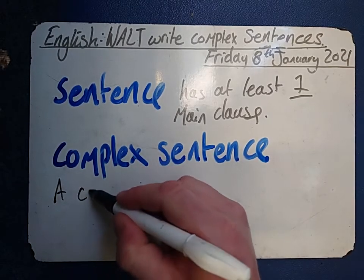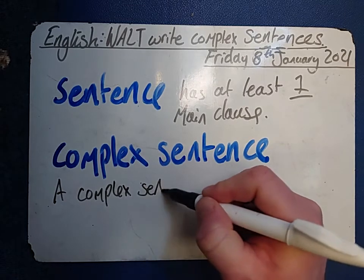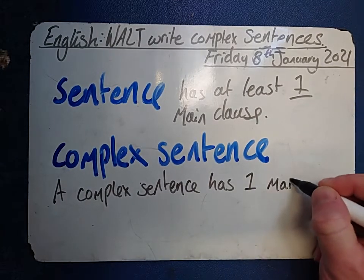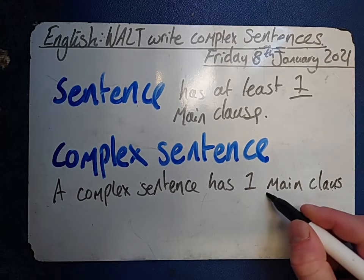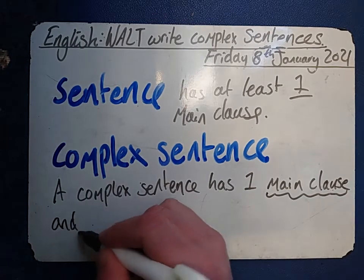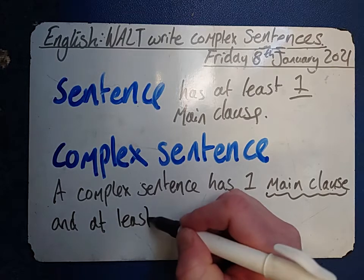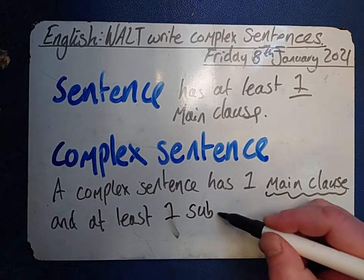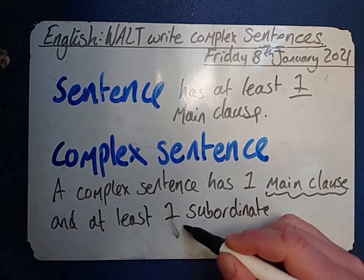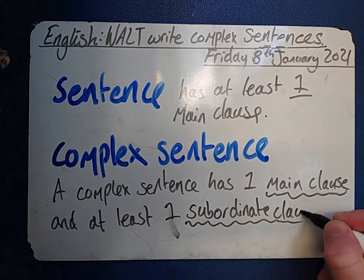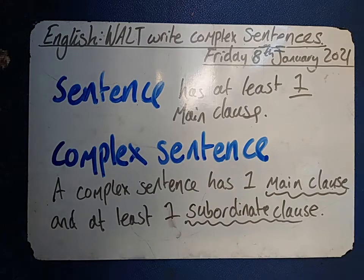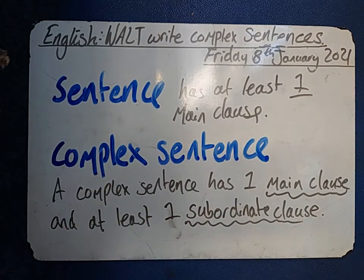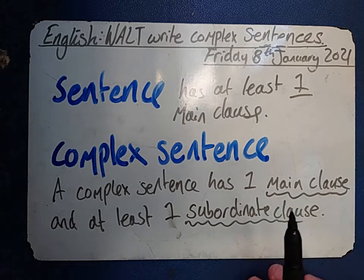So a complex sentence has one main clause — 'Peter is hungry' — and at least one subordinate, which is a less important clause. You can have two or three subordinate clauses. What I'd like you to do is pause the video at this point and copy down these things. This is a grammar lesson, so if you'd like to use highlighters and different colour pens to make 'sentence' and 'complex sentence' stand out for revision, then please do.